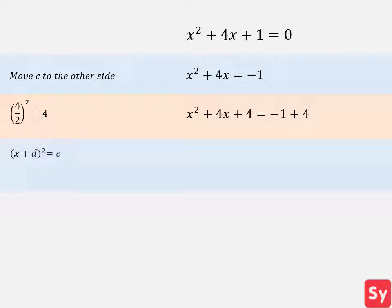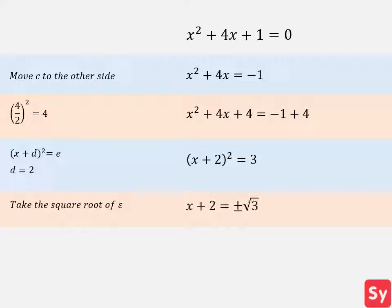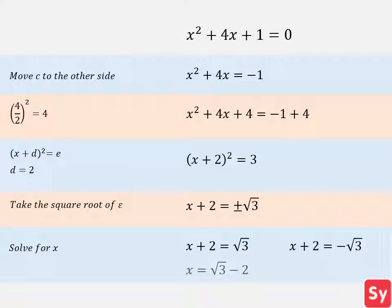Next, we rewrite the equation in square form. D is equal to b over 2, which is 2. The right side is negative 1 plus 4, which is 3, and we plug these into the equation. Next, we take the square root of 3. Now we can solve for x: x plus 2 equals the square root of 3, and x plus 2 equals negative square root of 3. So x equals square root of 3 minus 2, and x equals negative square root of 3 minus 2.